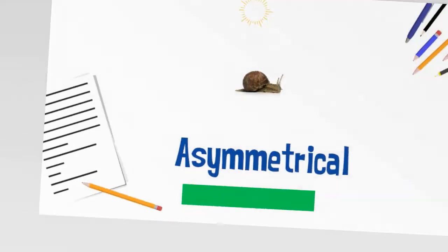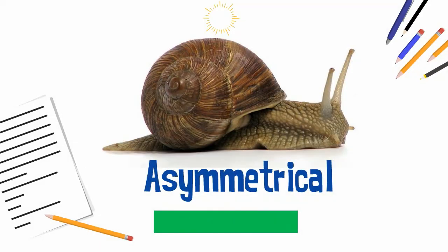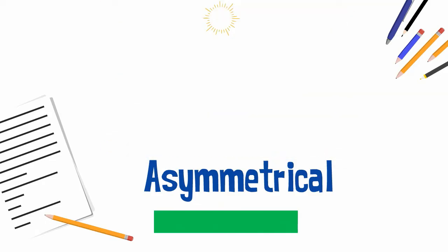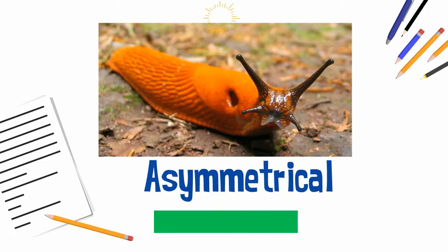Some snails, like this Roman snail, are asymmetrical because of the shape of its shell. This red slug is not asymmetrical because the breathing hole is on the right side.